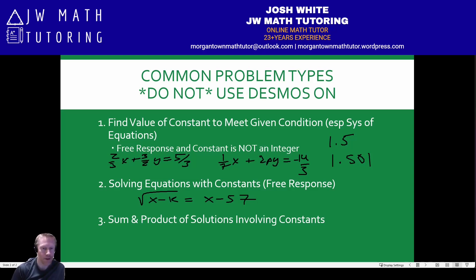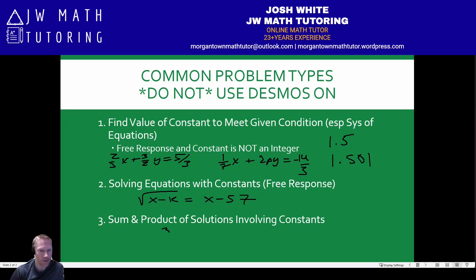The third type of problem is when you have sum and product of solutions problems, typically for quadratics but potentially higher powers as well, involving constants. I have not found an easy way to do the entire problem in Desmos. This is a type of problem where you might see something like three-sevenths, or an expression like two X minus three.